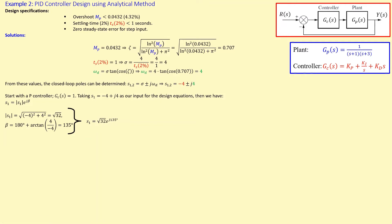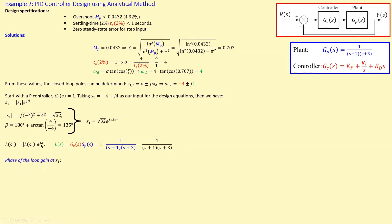The loop transfer function is the controller in cascade with the plant under unity gain feedback. With the P controller gain set to 1, the plant is 1/((s+1)(s+3)), so the loop transfer function simplifies to 1/((s+1)(s+3)). I now need to calculate its magnitude and phase at the design point s1.